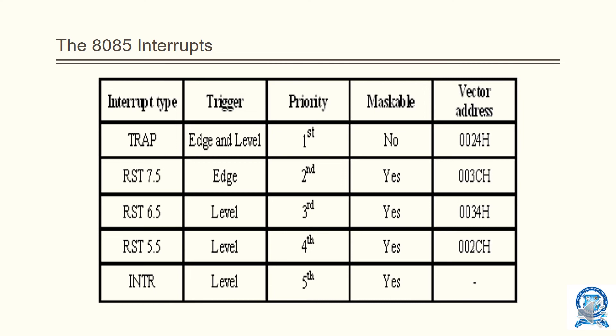The priority order is shown here. Priority matters when more than one interrupt occurs simultaneously. I have ordered them from highest to lowest priority: TRAP, being the non-maskable interrupt, takes the highest priority, followed by RST 7.5, then RST 6.5, then RST 5.5, and finally INTR has the least priority. This is how the priority level is ordered. Thank you.